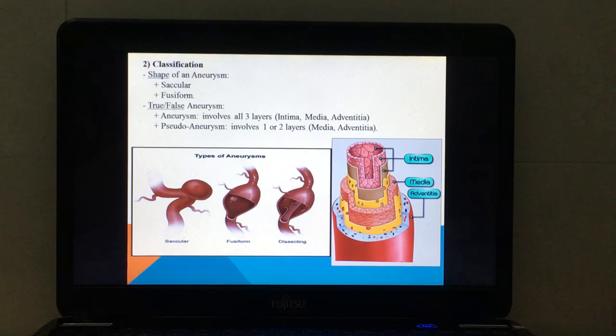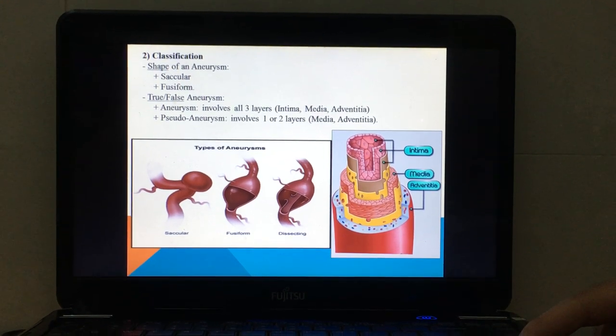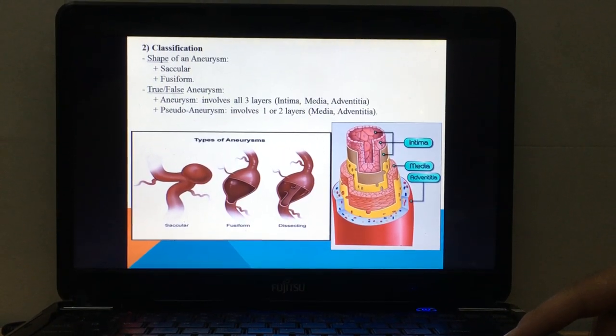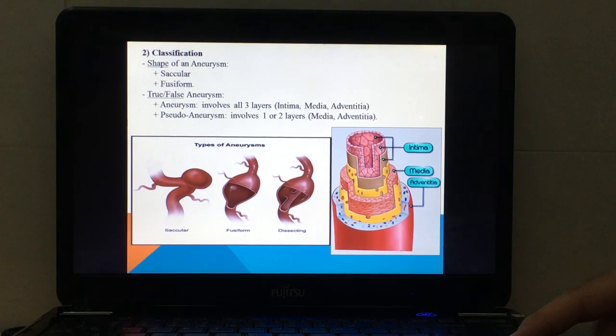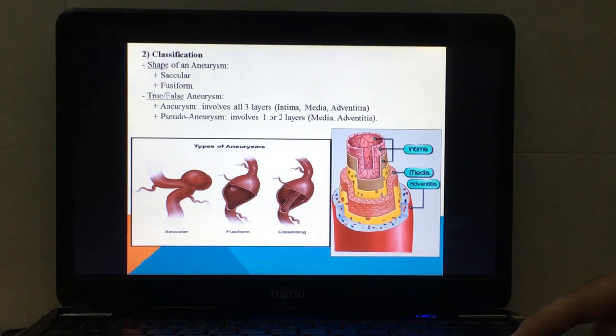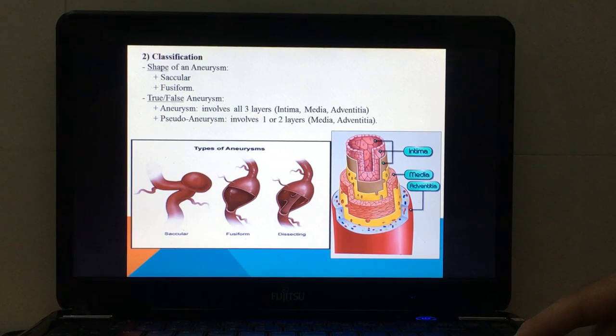Pseudoaneurysm is due to a defect in the vessel wall, defect of the intima or defect of both intima and media. It will form an extravascular hematoma that communicates with the intravascular space.